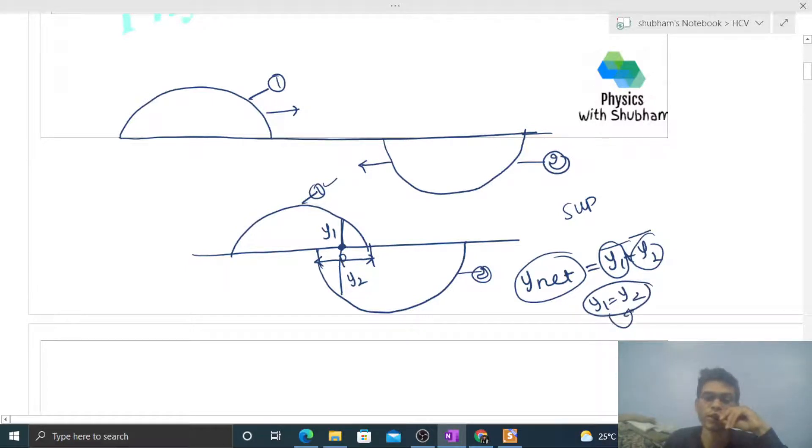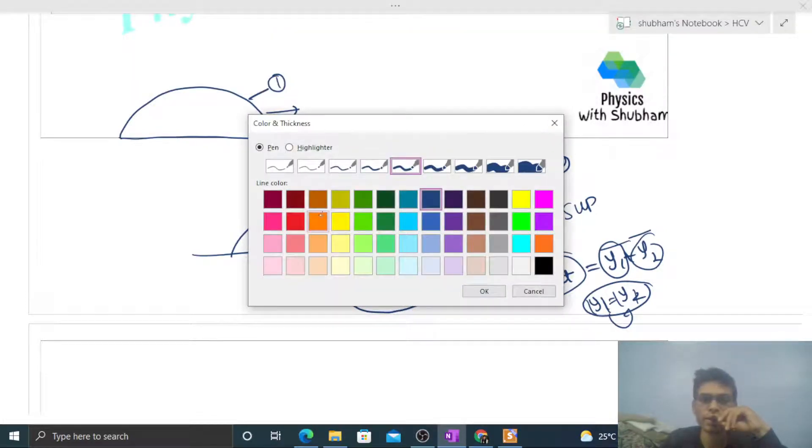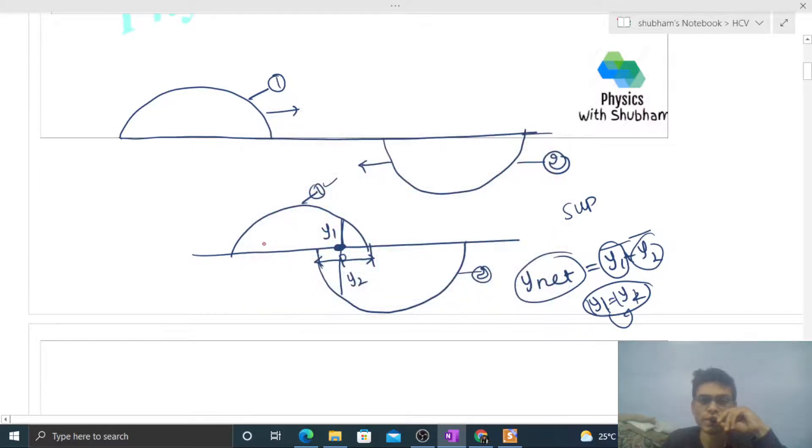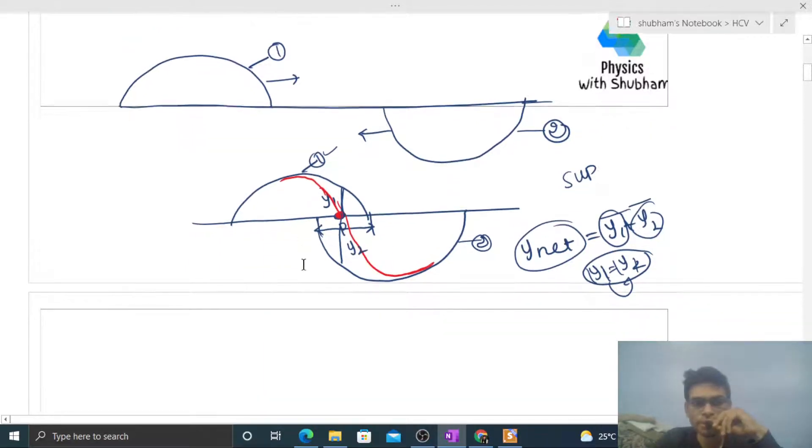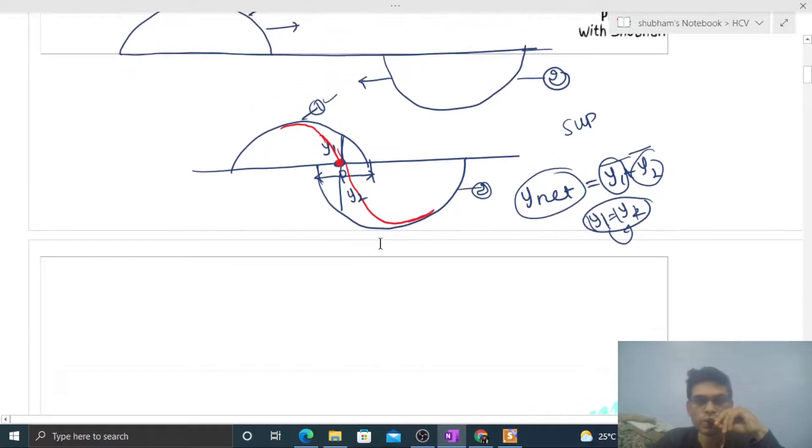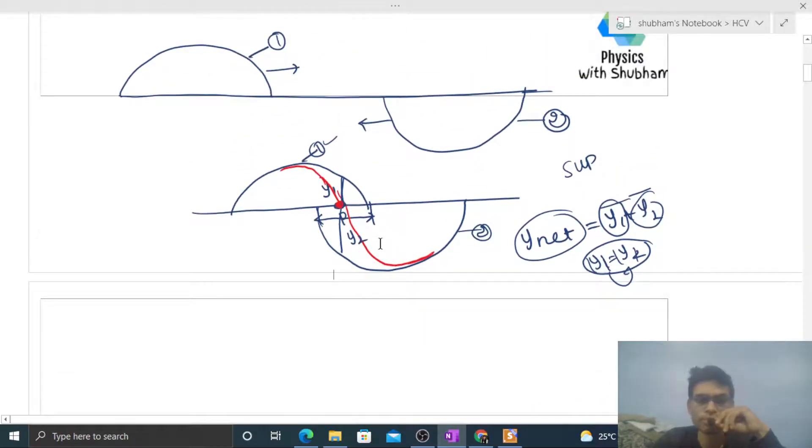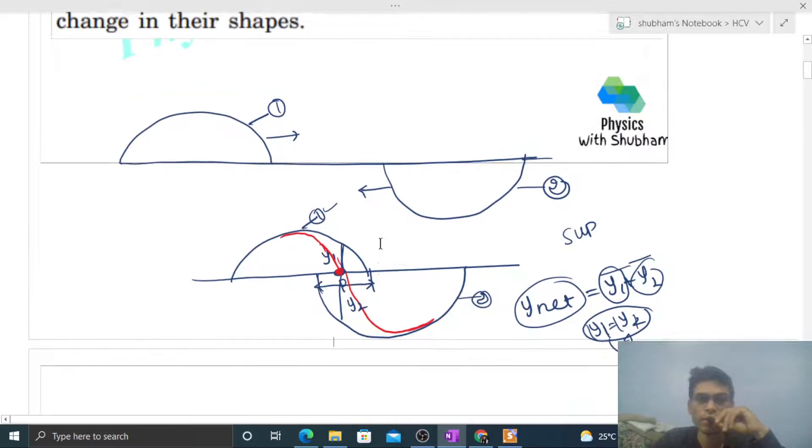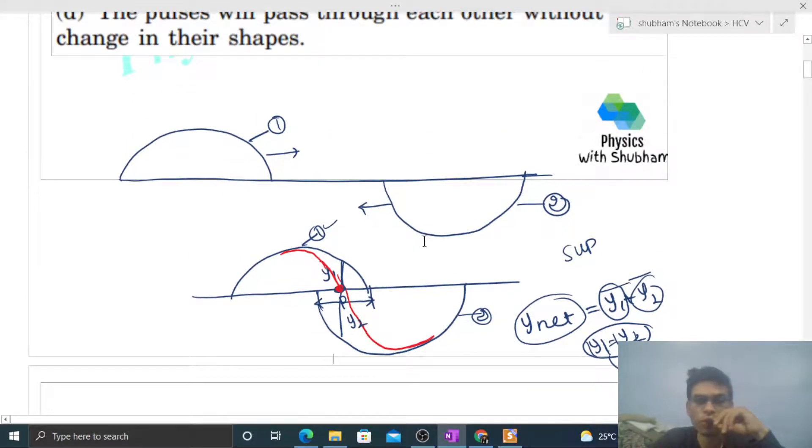So yeh aapka y2 hai. Inka jo vector sum aayega that will be the net displacement of the particle P. For instance, we can say ki y1 is equal to y2 kisi instant pe. Y1 is equal to y2 ho gaya. Magnitude barabar ho gaya. Us time pe jo net displacement hai point P ka wo zero rahega. It means point P kahin upar bhi nahi jayega, niche bhi nahi jayega.